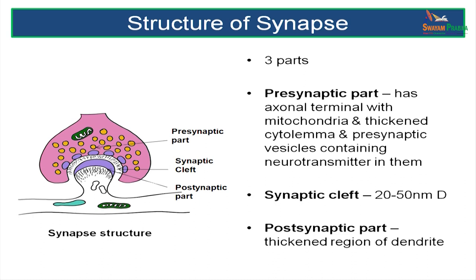A synapse has three parts: there is the presynaptic part, the synaptic cleft which is a space between the presynaptic part and the postsynaptic part. The synaptic cleft has a distance of about 20 to 50 nanometers in diameter.